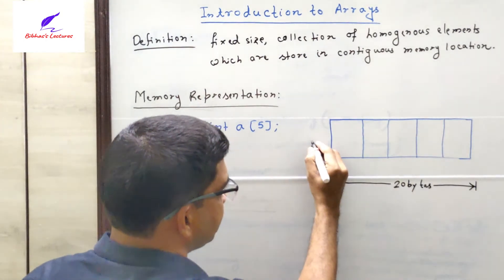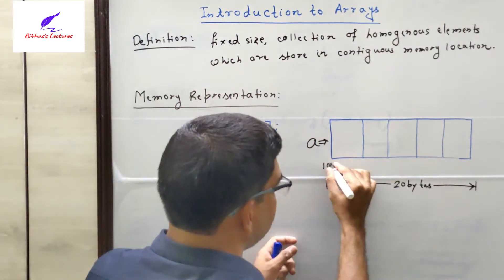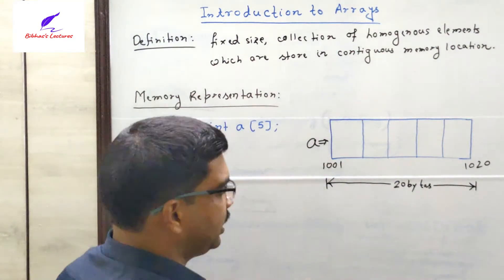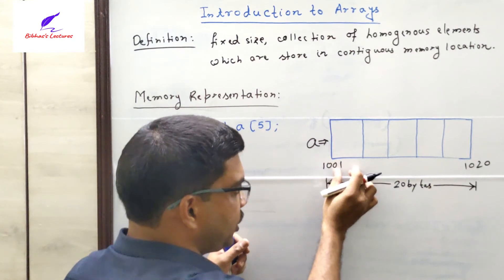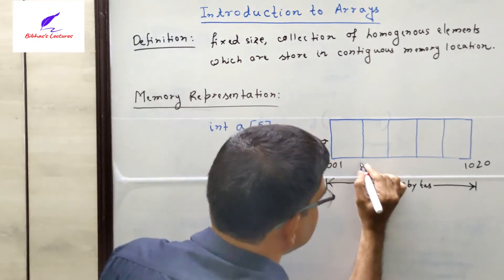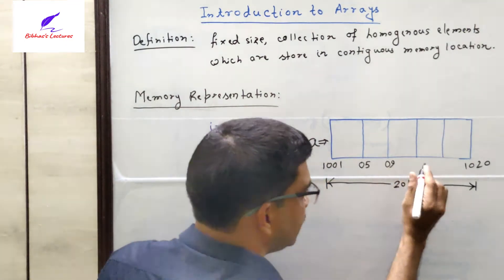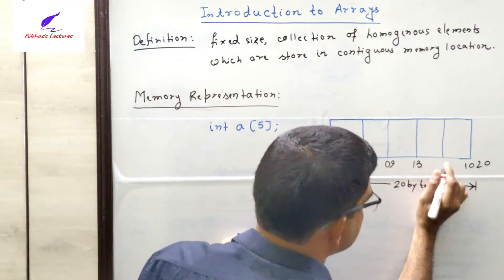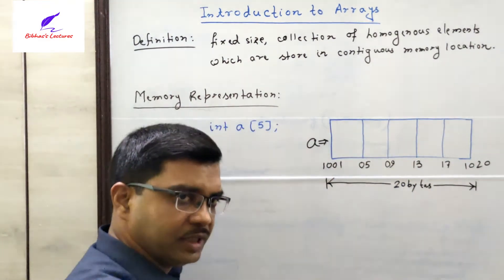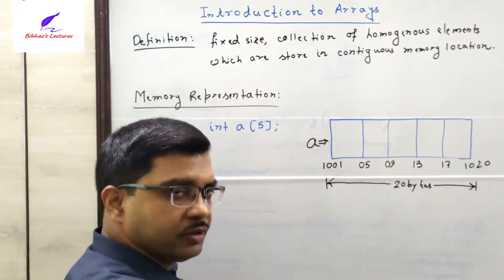Suppose the allocation is starting from 1001, so it will end at 1020. Each element takes 4 bytes: the first element occupies 1001 to 1004, the second element 1005 to 1008, the third element 1009 to 1012, the fourth element 1013 to 1016, and the fifth element 1017 to 1020. So each element takes 4 bytes, and the array as a whole takes 20 bytes of memory.